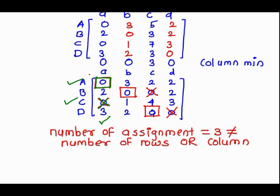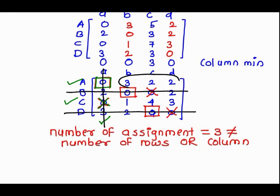After this process, we draw lines through the unmarked rows and the marked columns. We check that all zeros are covered by these lines. Then, in the next step, we find the smallest number from the uncovered elements: 3, 2, 2, 1, 4, 3. Out of these, 1 is the smallest.